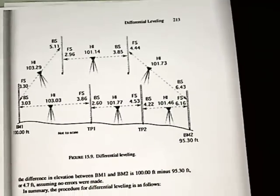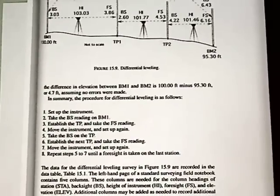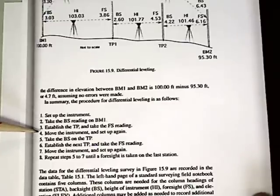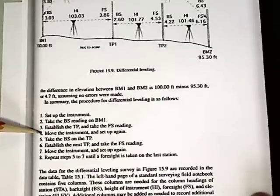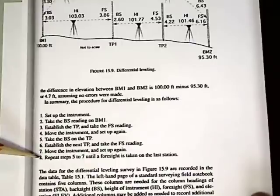If we were going to write down the procedures, it would look something like this: set up the instrument, take the back sight reading on BM1, establish the turning point, take the foresight reading, move the instrument, set up again — each time it's got to be level — take the back sight on the turning point, establish the next turning point, and continue on until you reach the last station.